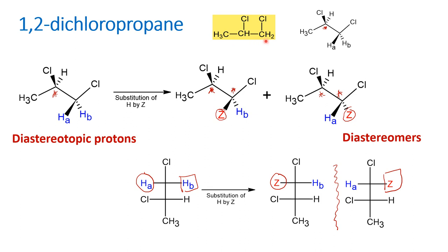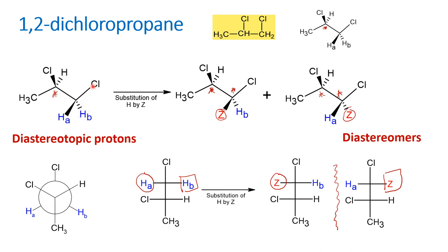Now the question is: why do we get four signals? Let us take the Newman projection of 1,2-dichloropropane. The front carbon is the second carbon and the back carbon is the first carbon. In the Newman projection, HA and HB have different neighboring environments. HA has chlorine and methyl as neighbors, while HB has hydrogen and methyl as neighbors. Because the neighboring chlorine is closer to HA and hydrogen is closer to HB, both will definitely give two different signals.